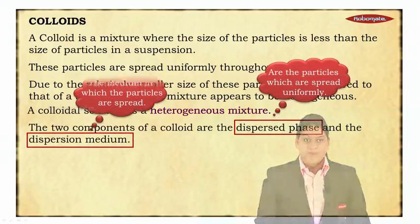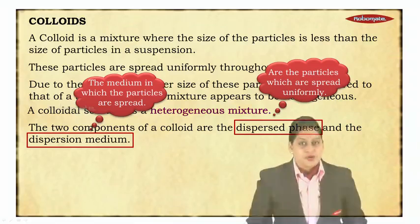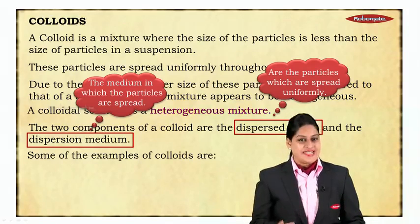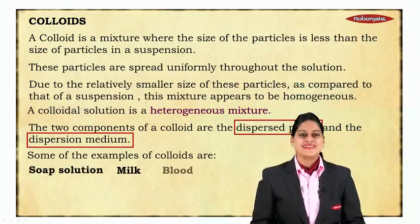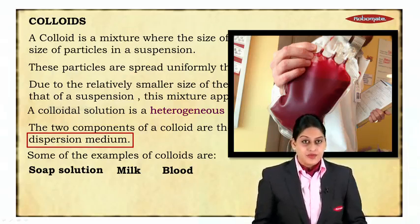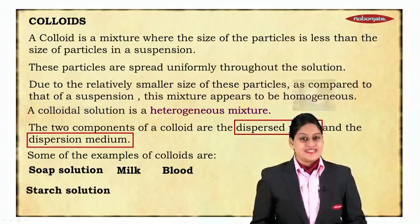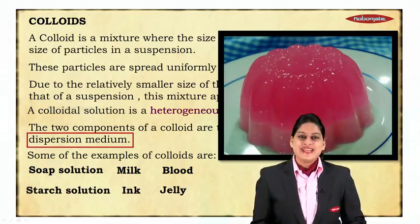The two components of colloid are dispersed phase and dispersion medium. Dispersed phase means the particles which are spread uniformly, and dispersion medium means the medium in which the particles are spread. Examples of colloids are soap solution, milk, blood — blood contains WBC, RBC, and platelets which you cannot see with the naked eye, but they are present, which is why blood is also an example of colloid. Other examples include starch solution, ink, and jelly.